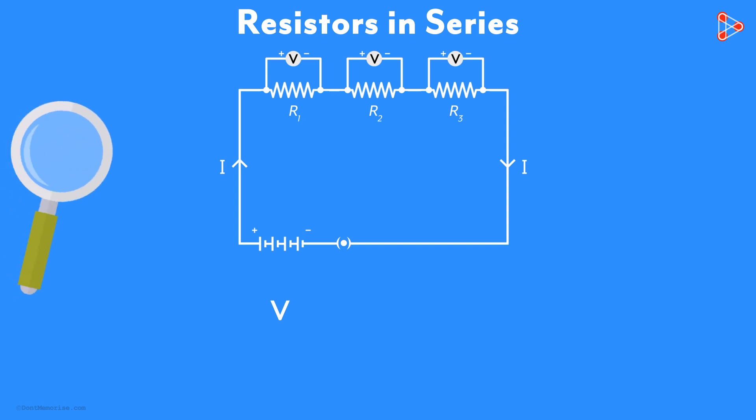You will notice that the potential difference across each of the resistors is different. Let's call them V1, V2, and V3 respectively.